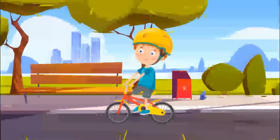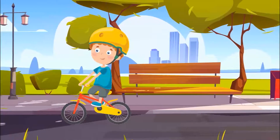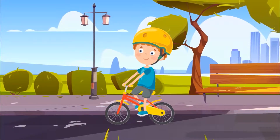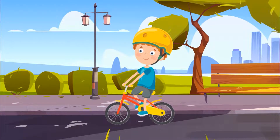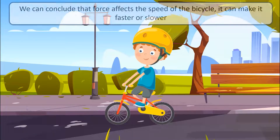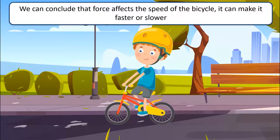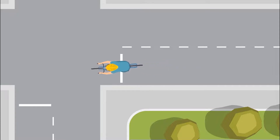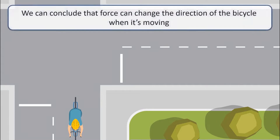Look at this child. He has begun to move the bicycle by pushing on the pedals. He can increase the speed if he pushes harder on the pedals, and he can slow it down by using less force. Thus, we can conclude that the force affects the speed of the bicycle and it can make it go faster or slower. And the direction of the bicycle can be changed while it is moving by turning the handlebar in the direction that it is needed, and in that way it changes the direction of the motion. Thus, we can conclude that force can change the direction of the bicycle when it's moving.